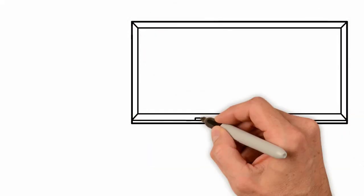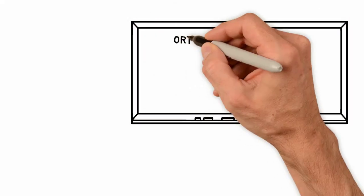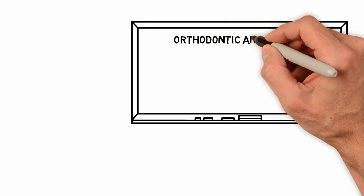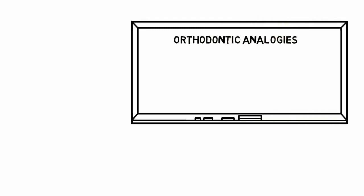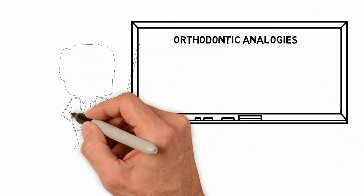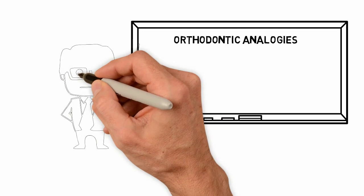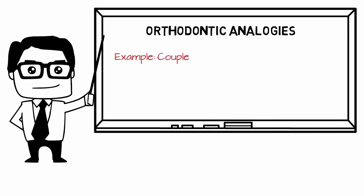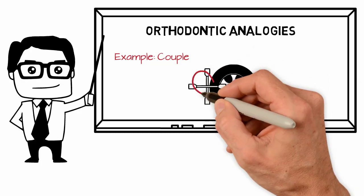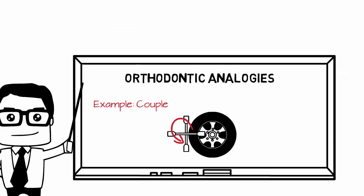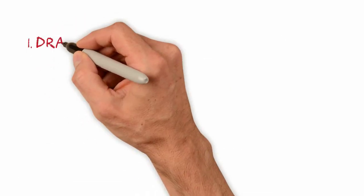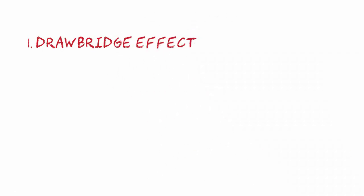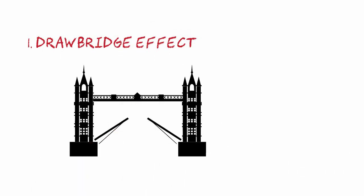The use of analogies in the teaching of orthodontic concepts is an excellent method for the retention and application of the acquired knowledge. By comparing new information with a familiar situation, the transmission of scientific concepts becomes more effective and strengthens the learning process. The goal of this whiteboard animation is to present the five main analogies in orthodontics.